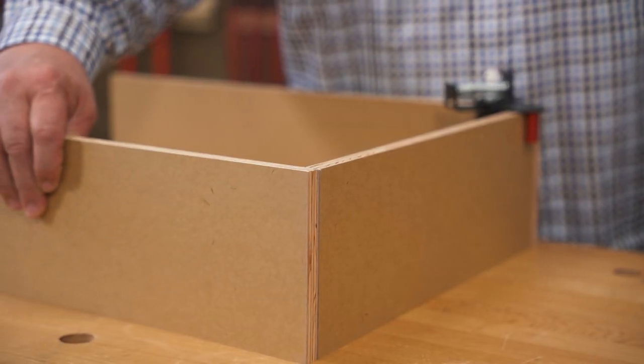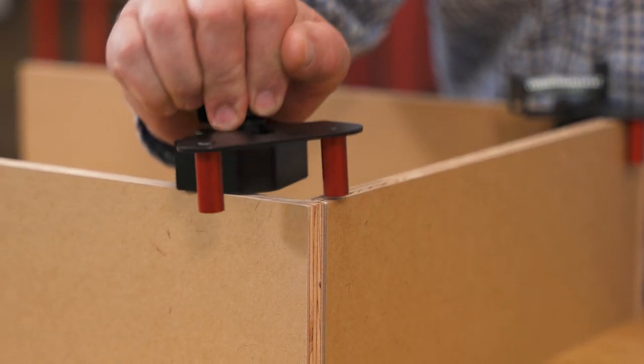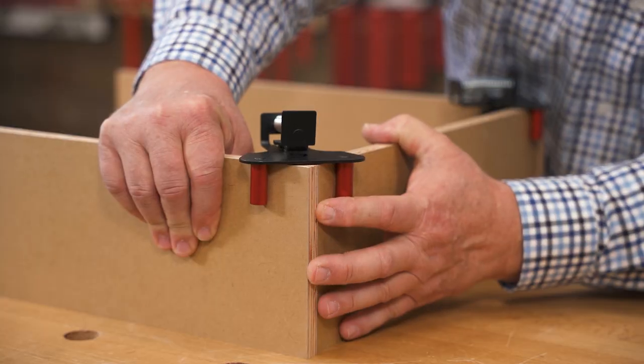Corner Locks use spring tension to hold boards square to each other. Just snap a corner lock onto the joint and slide it into place.